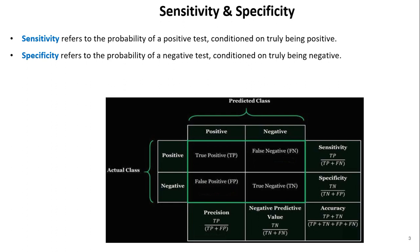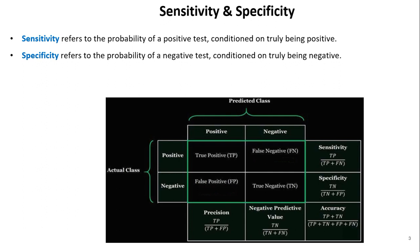We will start with the metrics sensitivity and specificity. Sensitivity is nothing but recall — it refers to the probability of a positive test condition being truly positive. Specificity refers to the probability of a negative test condition being truly negative. This is the confusion matrix, which relates TP, TN, FP, and FN to actual class and predicted class. Sensitivity is TP divided by TP plus FN, which is the same as recall. Specificity is TN divided by TN plus FP.